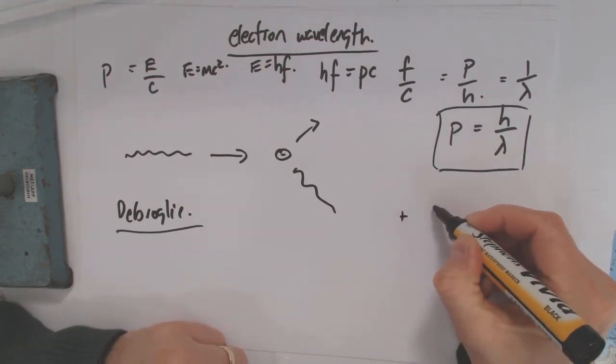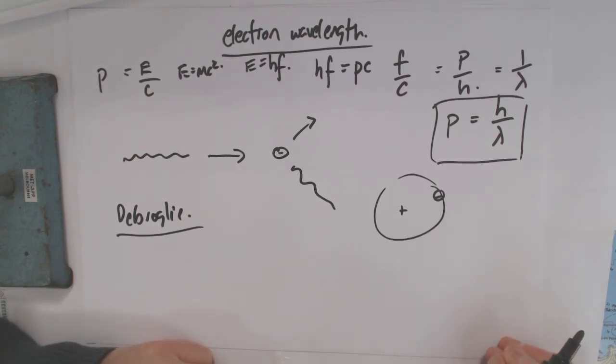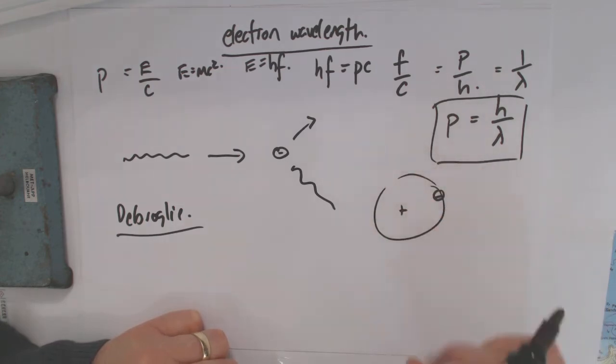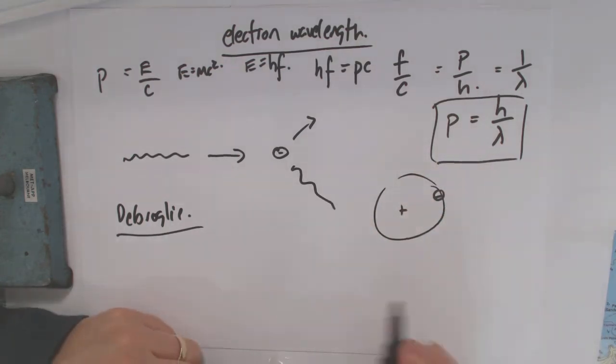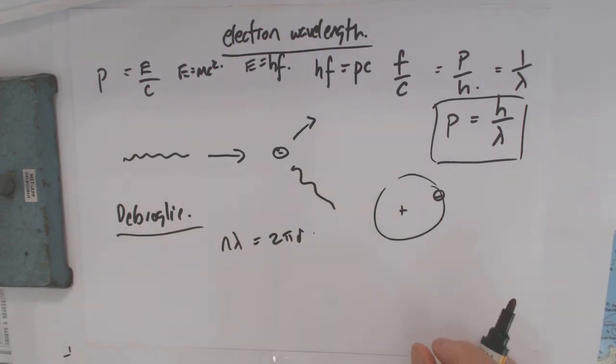And so he said, the little electron going around the hydrogen, we could think of that as a standing wave. And if we think of a standing wave, maybe only certain wavelengths can fit. And so he basically said, well, n wavelengths must equal 2 pi r, which is interesting.